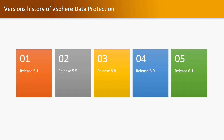Regarding the version history of vSphere Data Protection, as of now we have Release 6.1. Before that, there were releases 5.1, 5.5, 5.8, and 6.0.